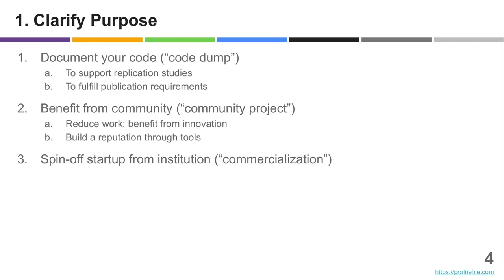A second and most common form of why people say they would like to open source is to create a community open source project, usually with the goal of sharing the effort of developing it. Also sometimes to benefit from the innovation that can come if more people help you with the software development. Finally, if you're the original creator, you are probably building reputation with it.